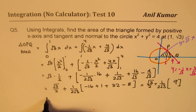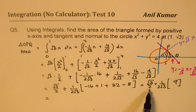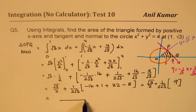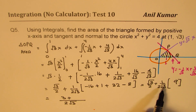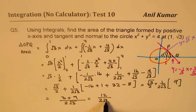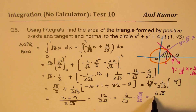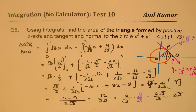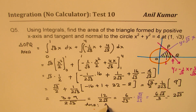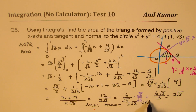Now we simplify. Taking 2√3 as a common denominator: we get (3 + 9)/(2√3) = 12/(2√3) = 6/√3. Rationalizing by multiplying and dividing by √3, we get 6√3/3 = 2√3. So the area equals 2√3 unit square.